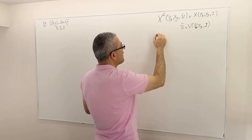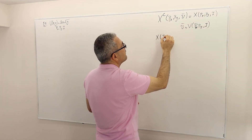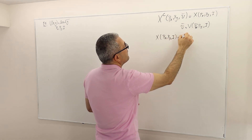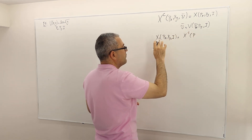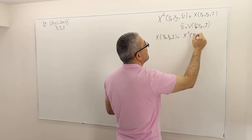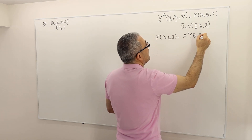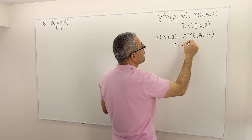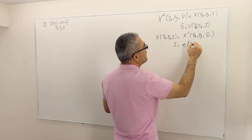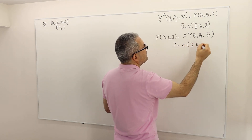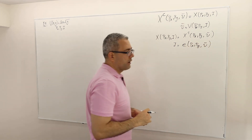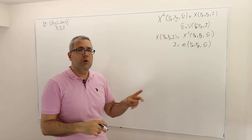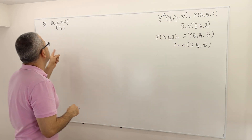Also, the Marshallian demand at PX, PY, income is equal to the Hicksian demand at U-bar whenever the income is in fact the expenditure level calculated at PX, PY, and U-bar. This is what I'm going to show with this simple example.